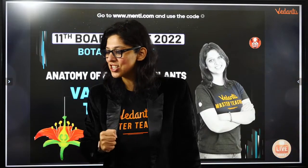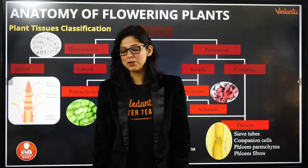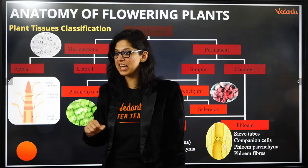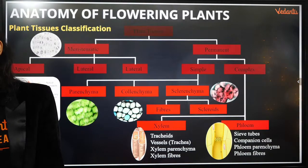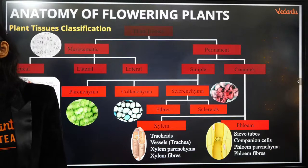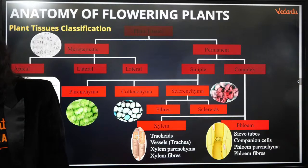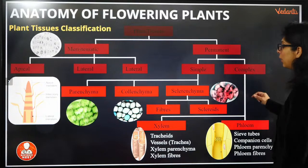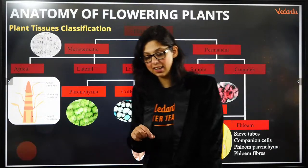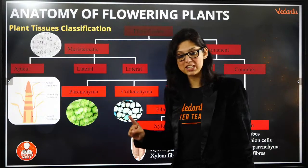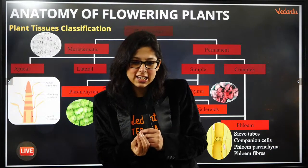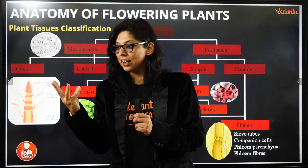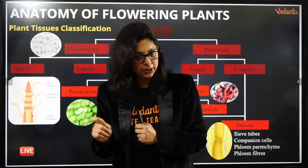Let's get started. How many of you attended yesterday's class? Do you remember what we've been doing? Let's start with plant tissue classification. We have the meristematic cells — those at the apex, those on the sides (lateral), and those at the internodal regions where leaves originate — that is called the intercalary meristem.